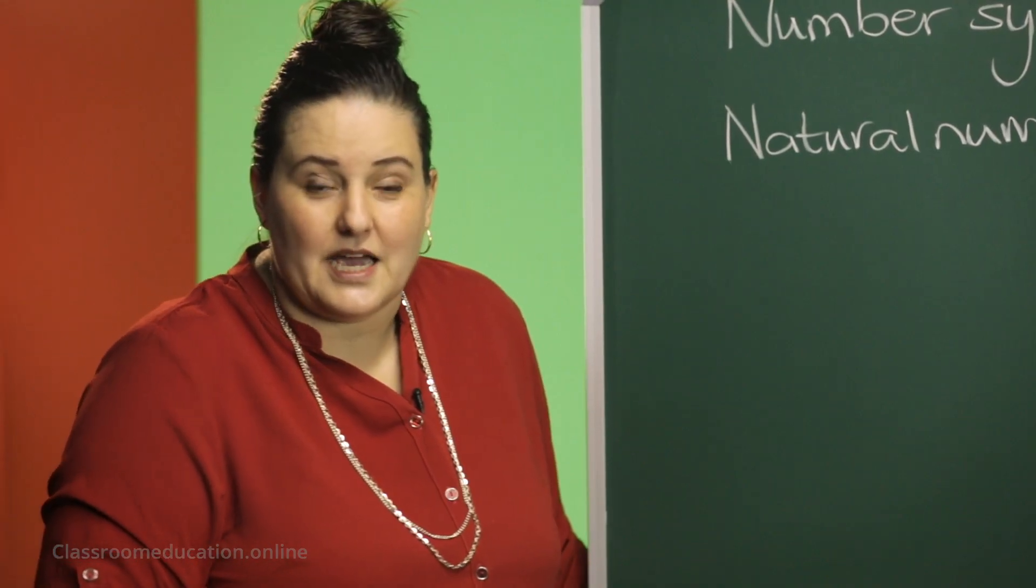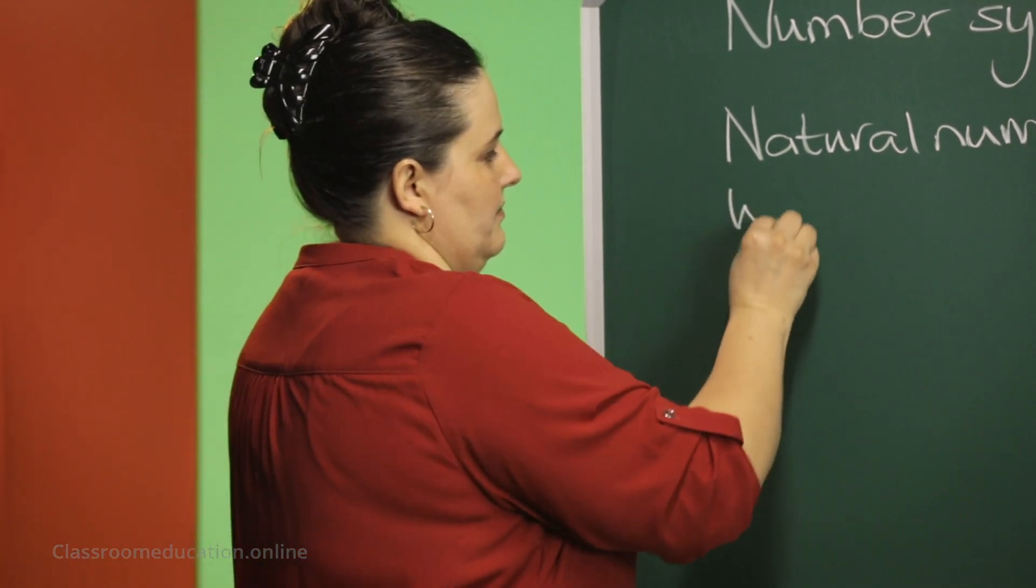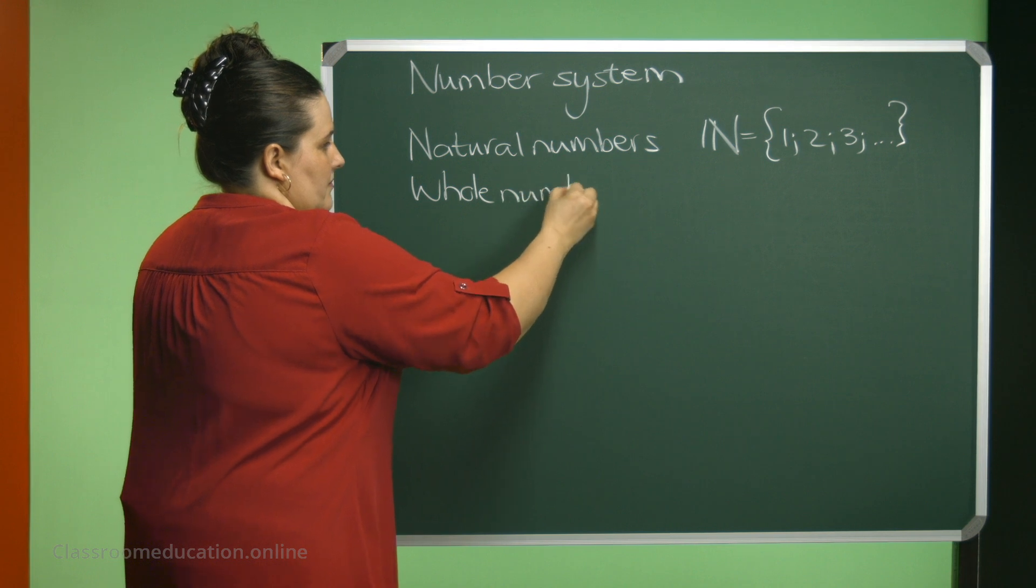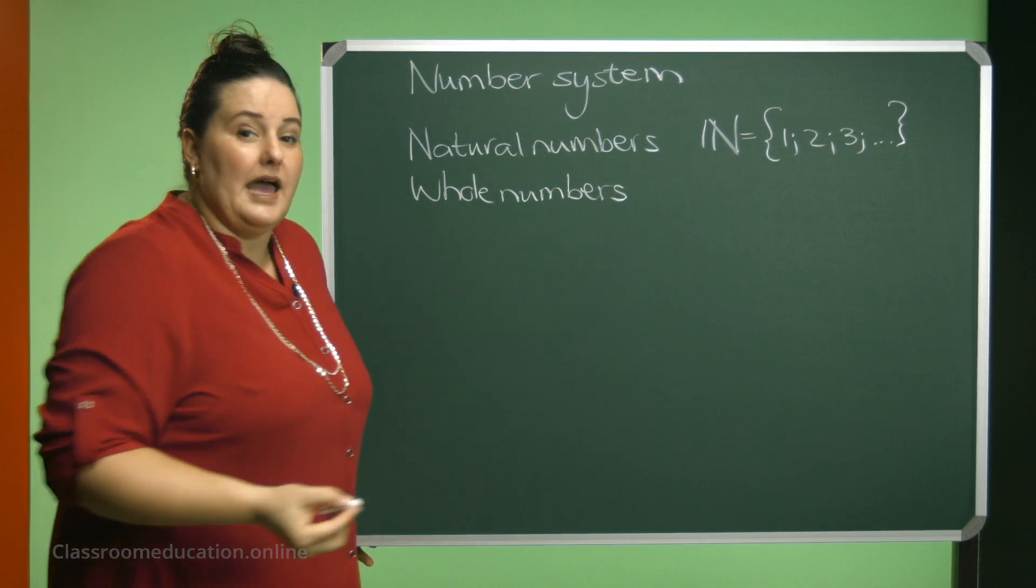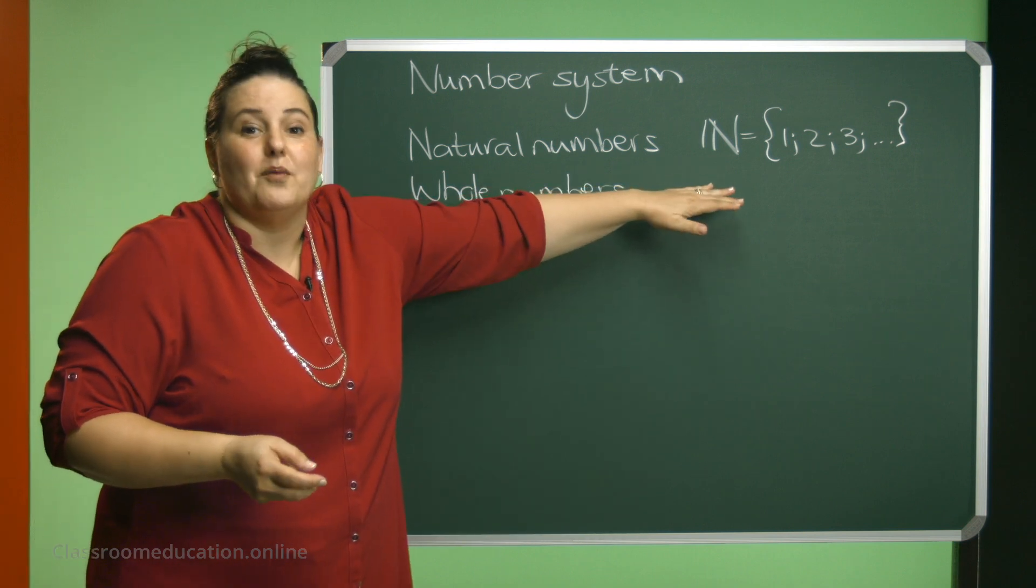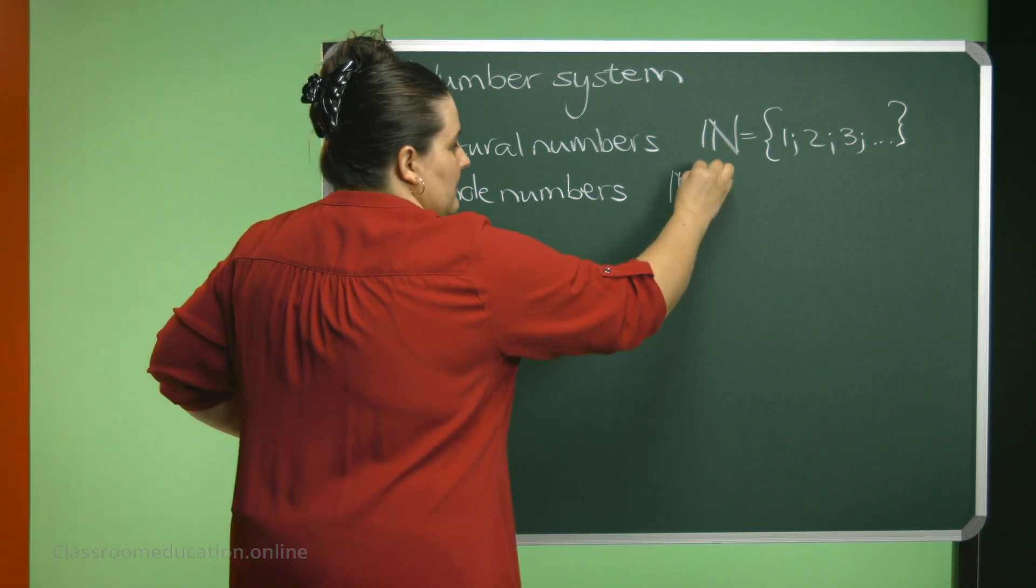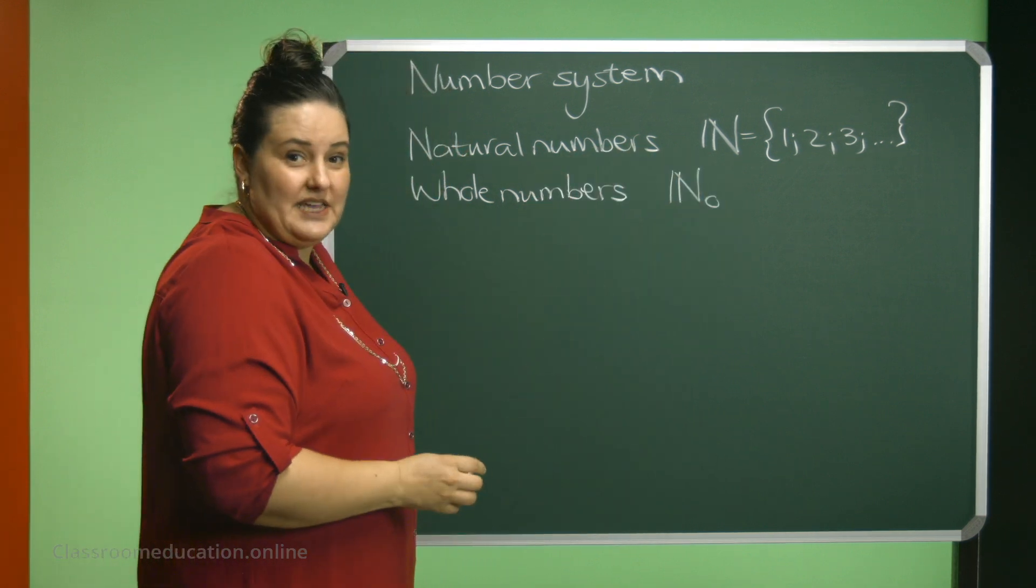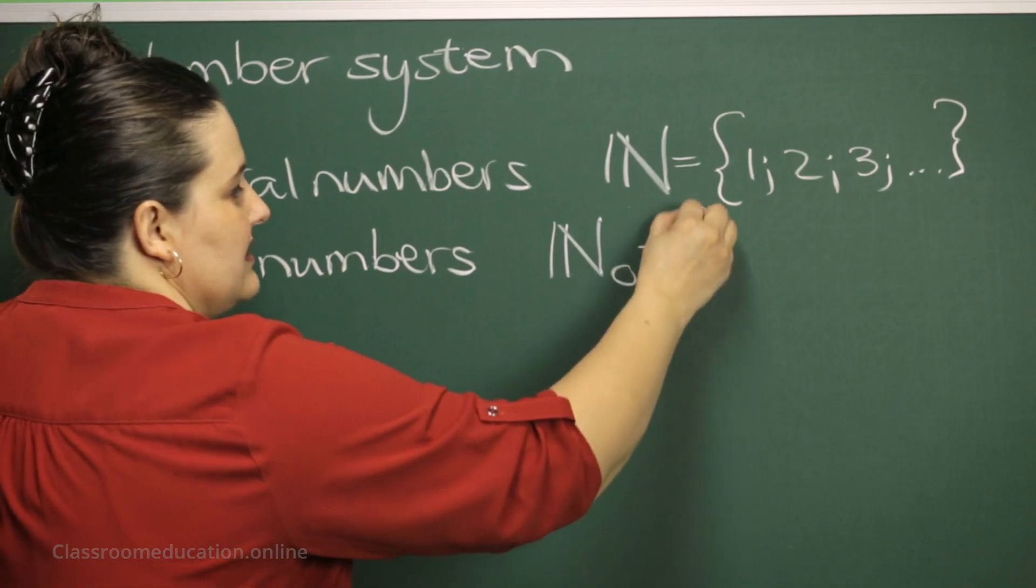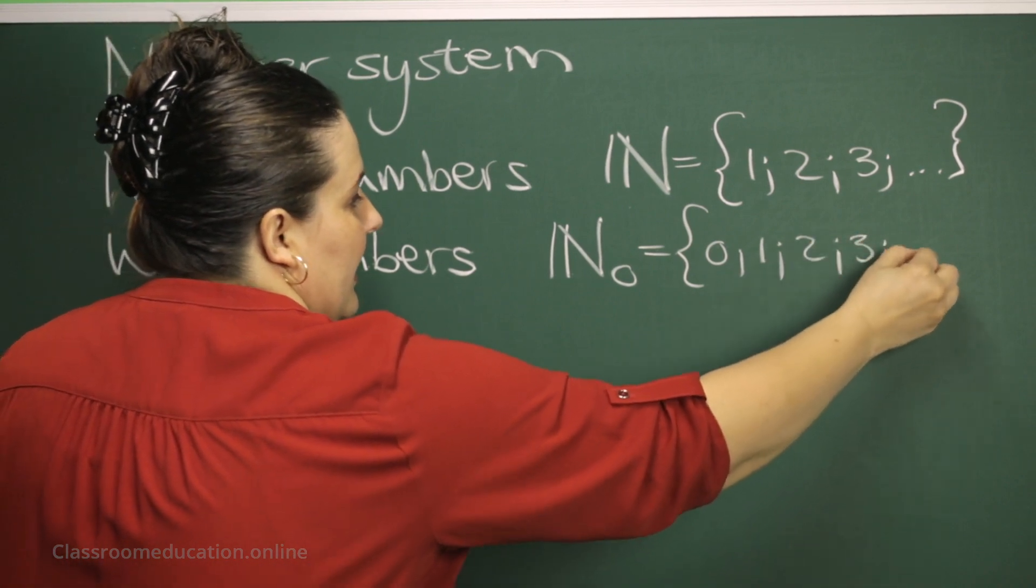Then the second type that we have are our whole numbers. Our whole numbers consist of all the natural numbers and a 0. The symbol, the N with a 0, indicating that we are talking about whole numbers and we can say the set is 0, 1, 2, 3 and so on.